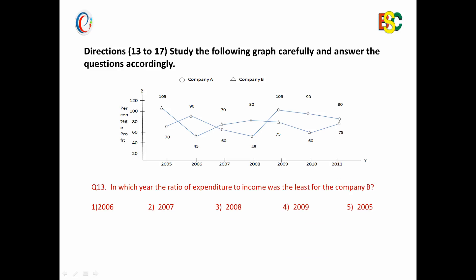This is our next data interpretation question. It is a line graph which shows the percentage profit of company A and B in the following years from 2005 to 2011. Company A is denoted by circle handles and company B is denoted by triangle handles. The first question in this graph says: in which year the ratio of expenditure to income was the least for company B?